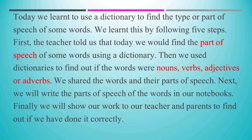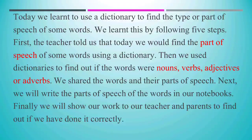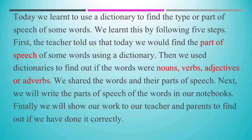Today we learned to use a dictionary to find the type or part of speech of some words. We learned this by following five steps. First, the teacher told us that today we would find the part of speech of some words using a dictionary. Then we used dictionaries to find out if the words were nouns, verbs, adjectives, or adverbs. We shared the words and their parts of speech. Next, we will write the parts of speech of the words in our notebooks. Finally, we will show our work to our teacher and parents to find out if we have done it correctly.